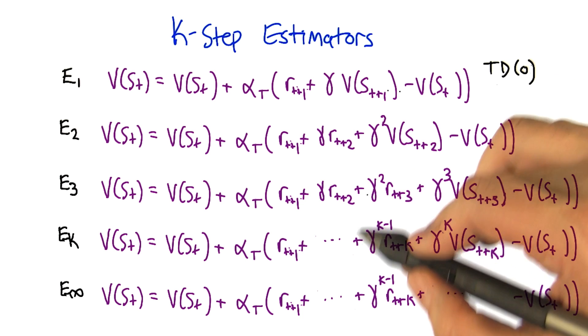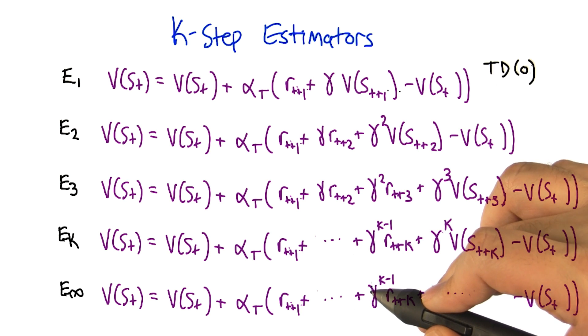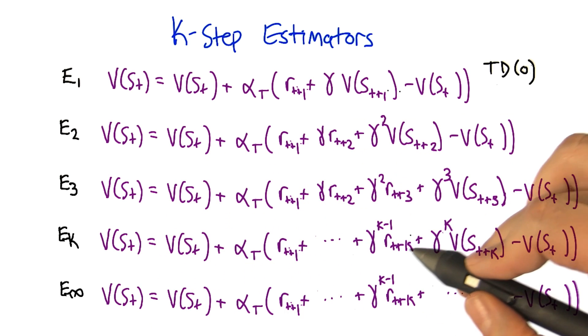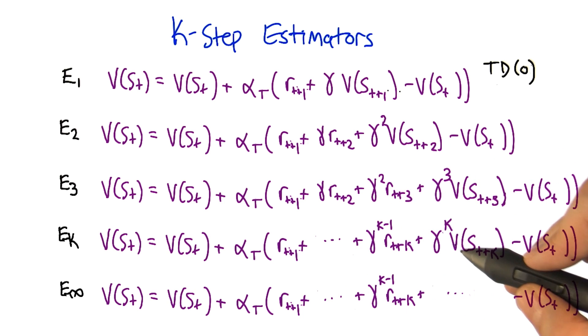And in fact, we can keep, if we continue doing this arbitrarily, we eventually get to E infinity where, let's see what would happen in that case. So we get the sum of rewards and it keeps going and it keeps going and eventually at infinity, we look at the state that we end up at infinity, which of course isn't a real thing.